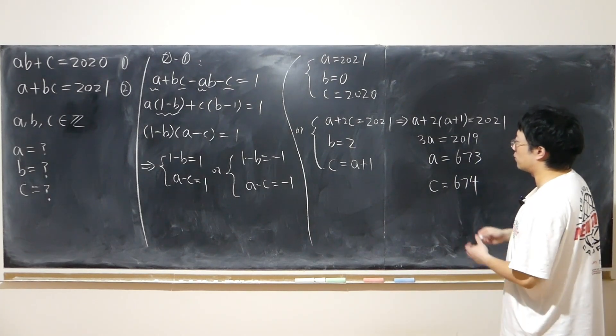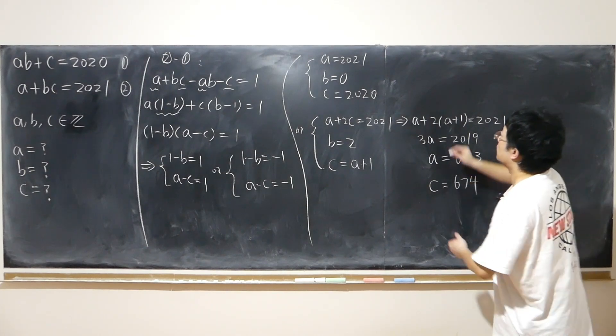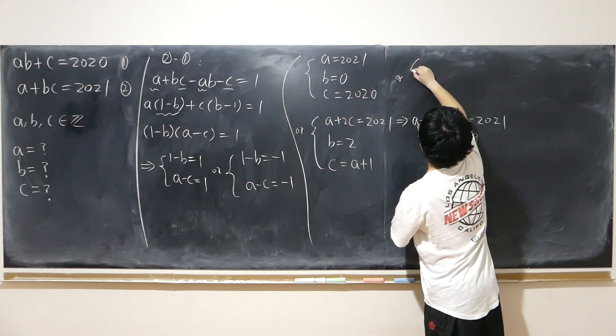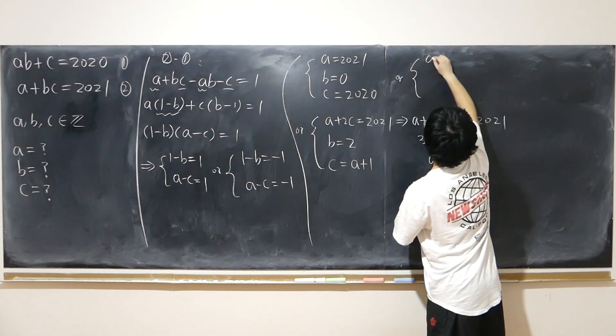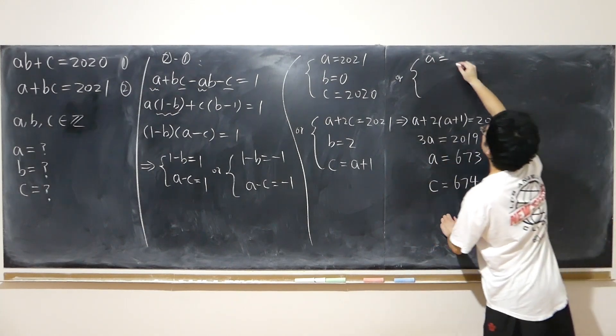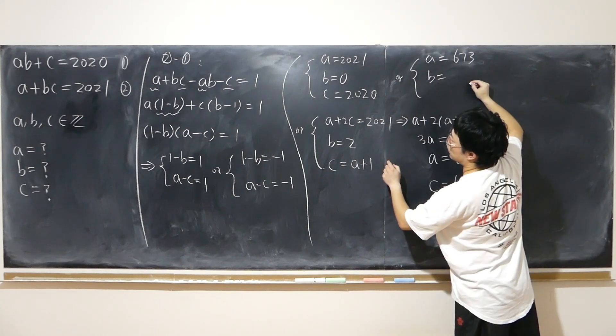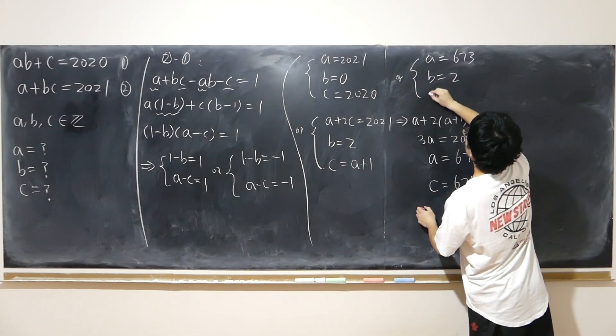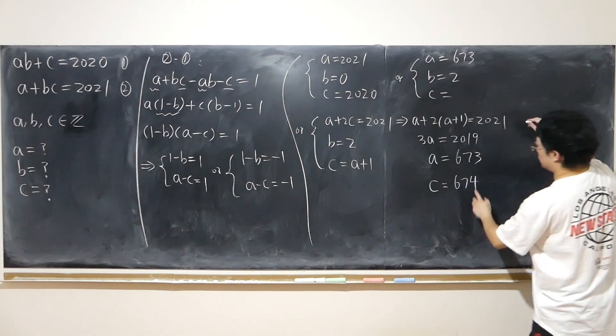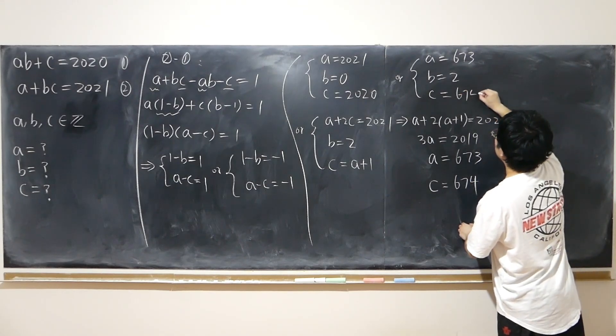So I have second solution, which is a is equal to 673. b is equal to, like I said, equal to in this case, 2, right? Followed by c is equal to 674.